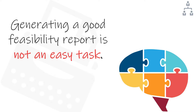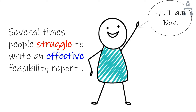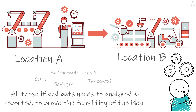However, generating a good feasibility report is not an easy task. Several times, people struggle to write an effective feasibility report — just like Bob. Bob is a senior analyst in his Fortune 500 company. He has been asked to write a feasibility report and he is stuck in a difficult situation. He doesn't know what exactly the feasibility report consists of. The company CEO wants to move the manufacturing site from location A to location B to save money. Bob needs to consider environmental issues, tax issues, savings, and many other factors. But the thing is, Bob is doing it for the first time and he's not sure what sections to include or where to focus his effort.